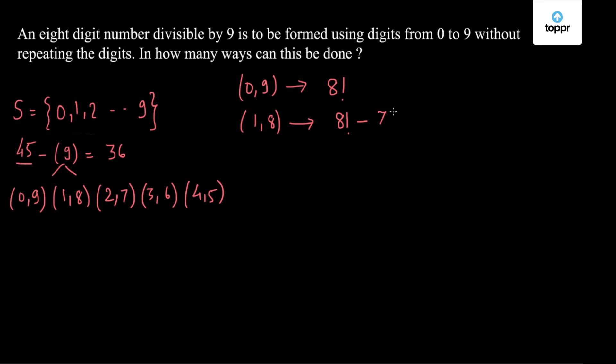So we will subtract those cases, that will be 7 factorial. Similarly for (2,7) it will be 8 factorial minus 7 factorial. (3,6) again we have 8 factorial minus 7 factorial, and (4,5) also I have 8 factorial minus 7 factorial.